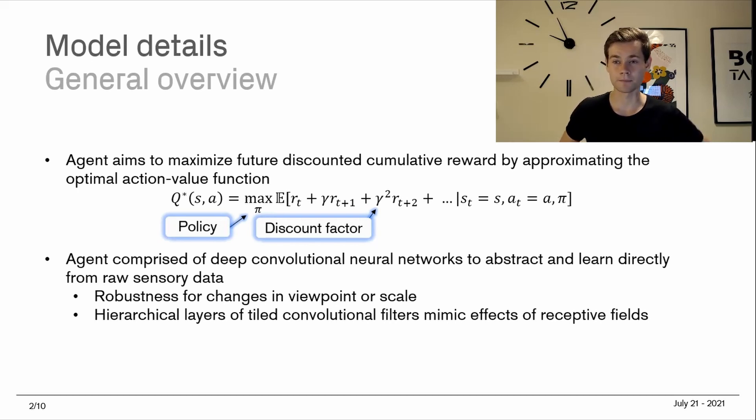If we're in state S and take action A, and then follow the policy which tells us how we're acting in our state space, it tells us what the future discounted cumulative reward is going to be. The optimal Q value function is what we want to find, because if we have that, then we can pick the best actions and then we have an optimal policy to follow.